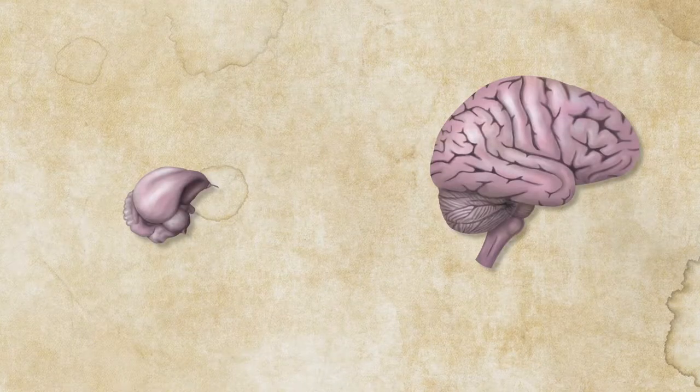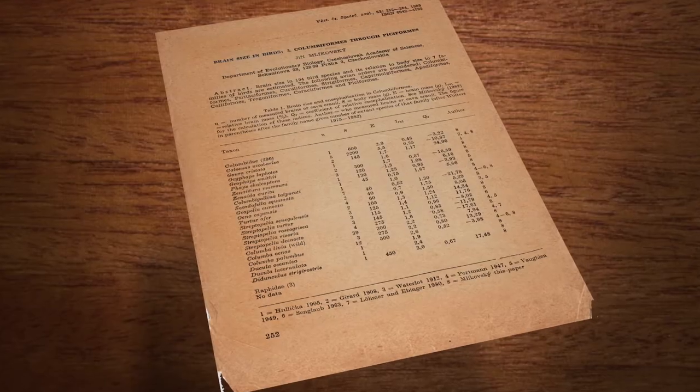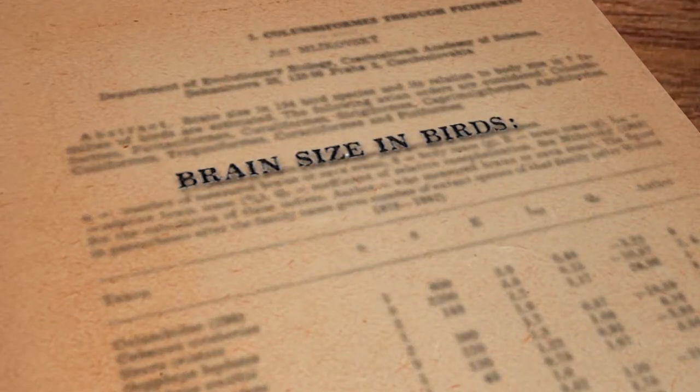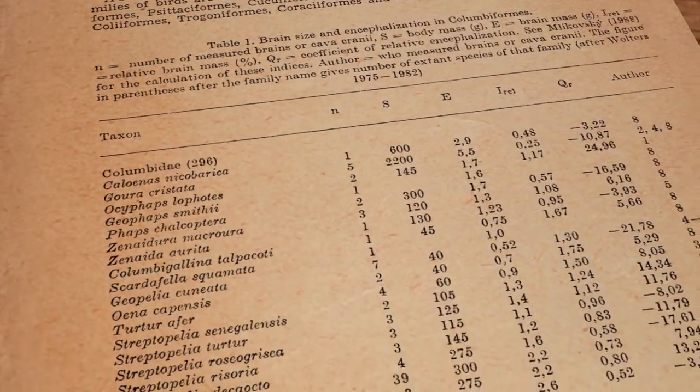So the next thing we need to know is the ratio of the size of the human and the woodpecker brain. And much to my amazement, I found a paper called Brain Size in Birds. This paper had table after table for many different species of birds, and they had measured the bird brain mass.